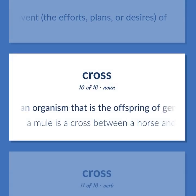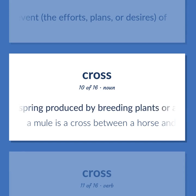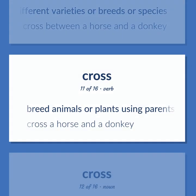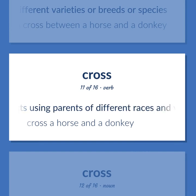Genetics: An organism that is the offspring of genetically dissimilar parents or stock, especially produced by breeding plants or animals of different varieties, breeds, or species. A mule is a cross between a horse and a donkey. Breed animals or plants using parents of different races and varieties — cross a horse and a donkey.